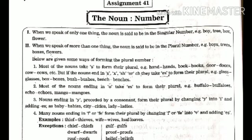Third: nouns ending in 'y' preceded by a consonant — that is, any noun that ends in 'y' and has a consonant before it — form their plural by changing 'y' into 'i' and adding 'es'. So remove the 'y', put 'i', and then add 'es'. For example: baby → babies, city → cities, lady → ladies. This rule applies when there is a consonant before the 'y'.